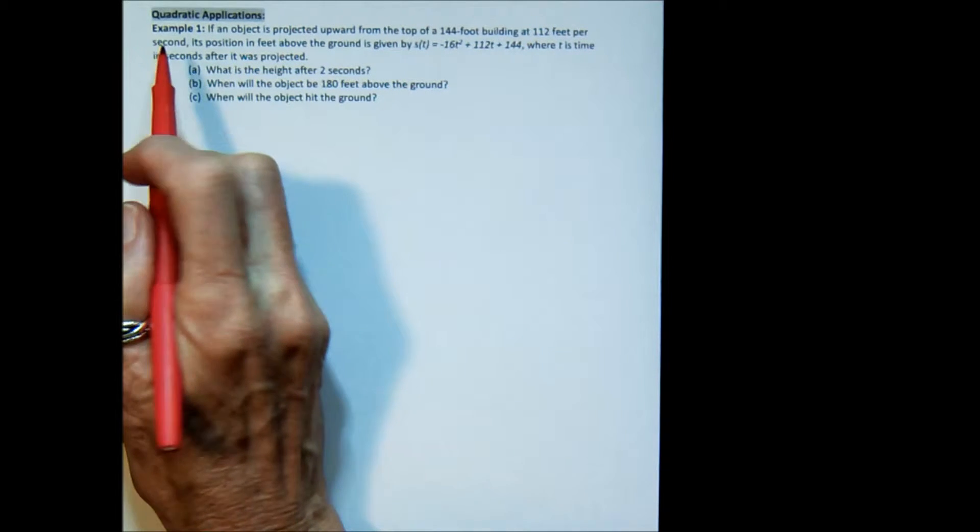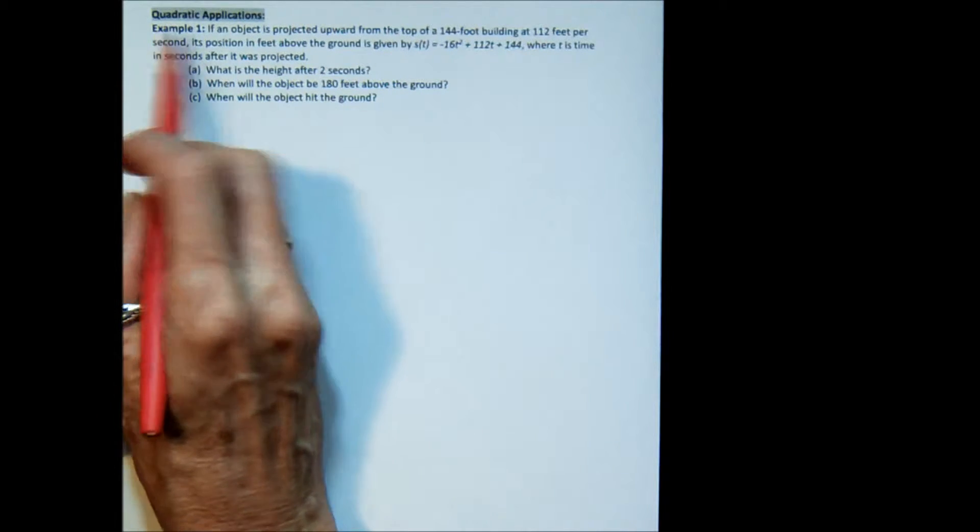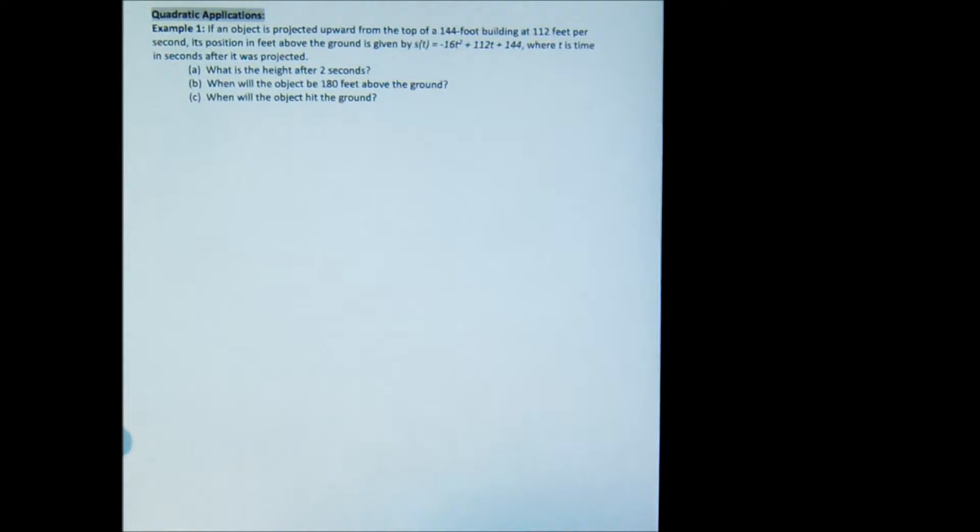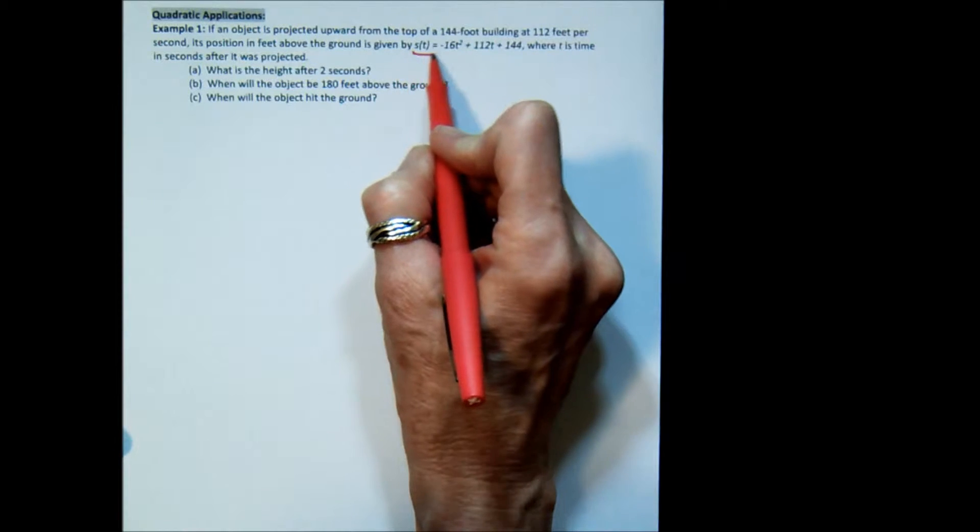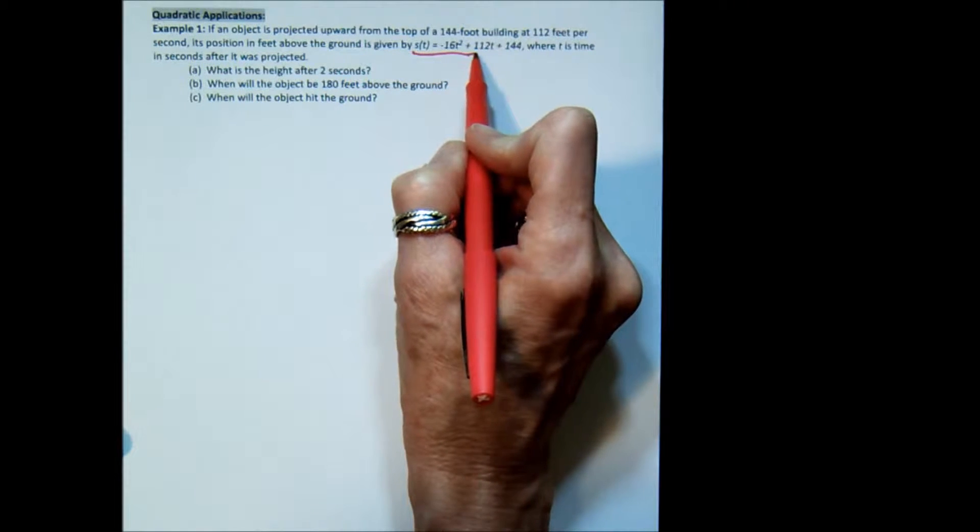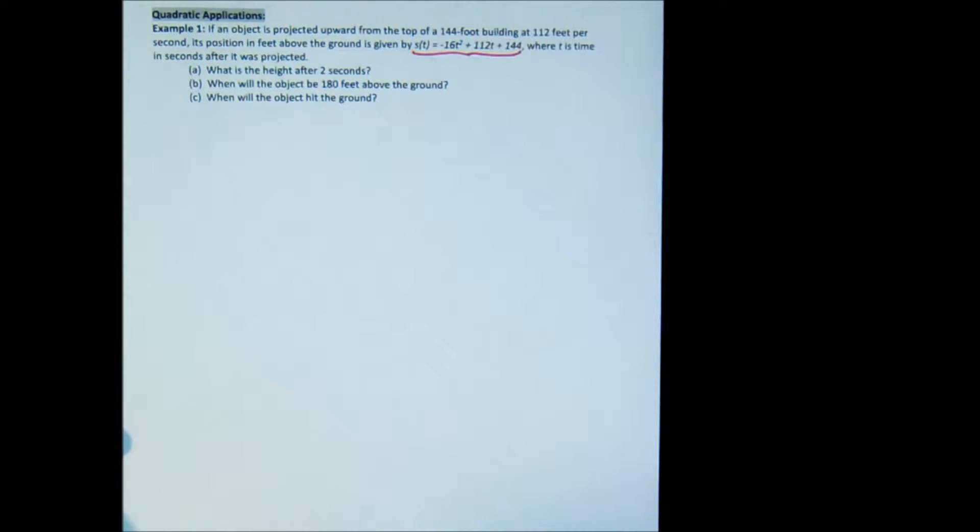This video is going to go over two examples of quadratic applications. So let's look at the first one. If an object is projected upward from the top of a 144-foot building at 112 feet per second, its position in feet above the ground is given by this equation: s(t) equals negative 16t squared plus 112t plus 144, where t is the time in seconds after it was projected.